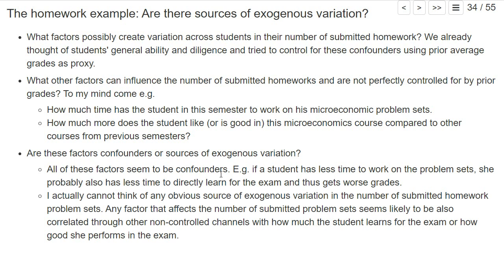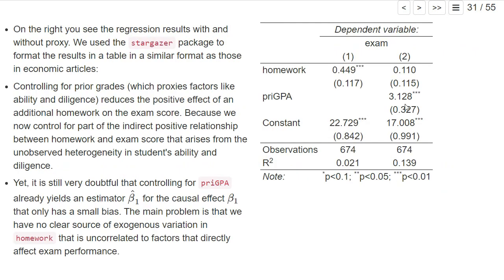In this example, I cannot really think of any obvious source of exogenous variation in the number of submitted homeworks. Probably all the variation comes from some confounders. I can try to control for some of the confounders, but that does not help if the remaining variation also comes from other confounders. If I really don't have any source of exogenous variation, then I really cannot get a well-identified, unbiased estimator.